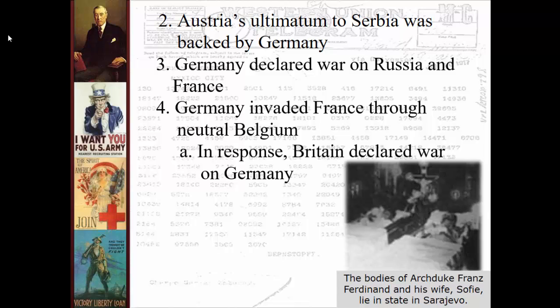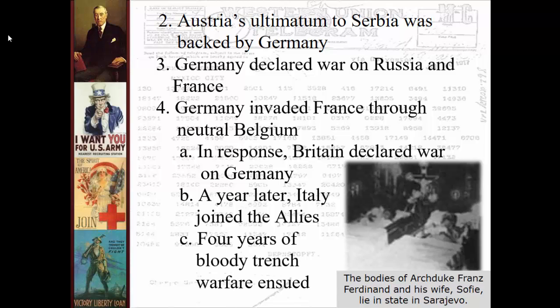Germany, during the course of the war, invades France. They go through a neutral country, Belgium, which had an alliance with Britain — that's going to bring Britain into the war. A year later, Italy joins on the side of the Allies — remember, it's different in World War II. This is the war where we have the bloody trench warfare, the stalemate — the lines barely ever move. Mass killing on a scale never seen before in battle, just wiped out entire male populations. Tens of millions of deaths, just slaughter on the battlefields, sending men to their death.